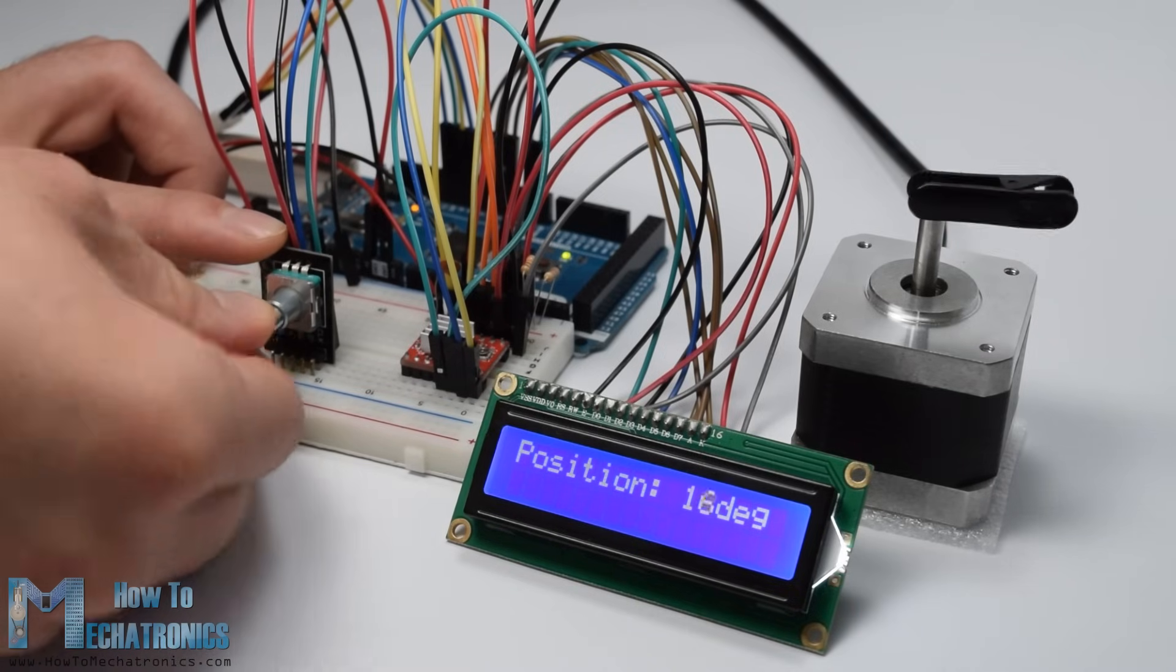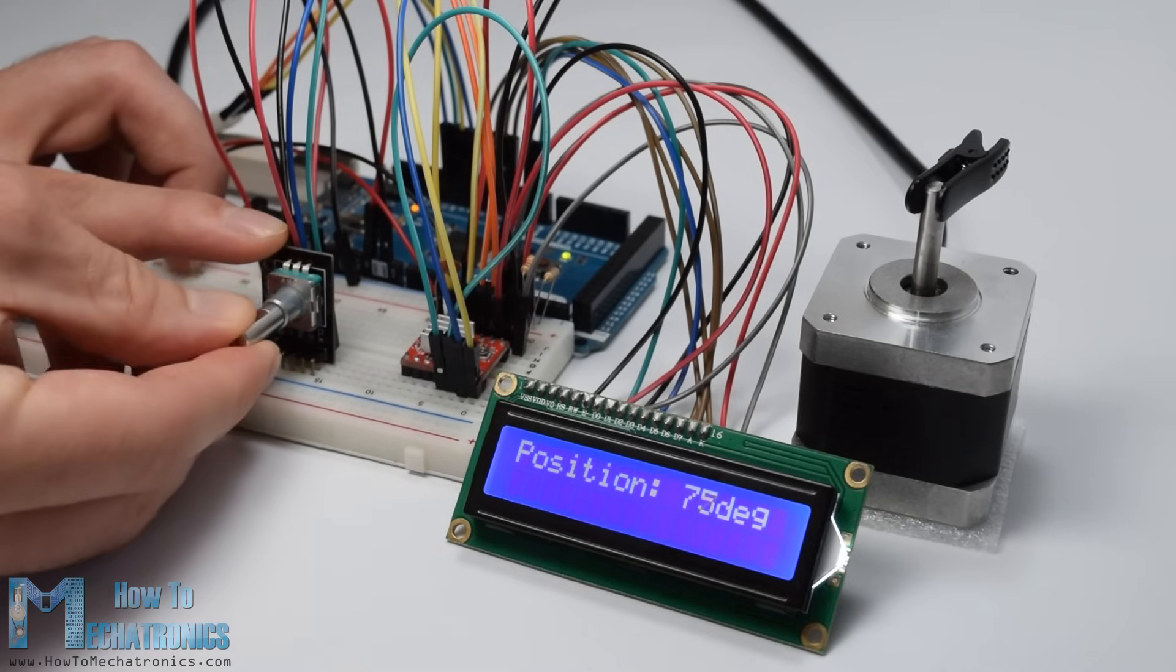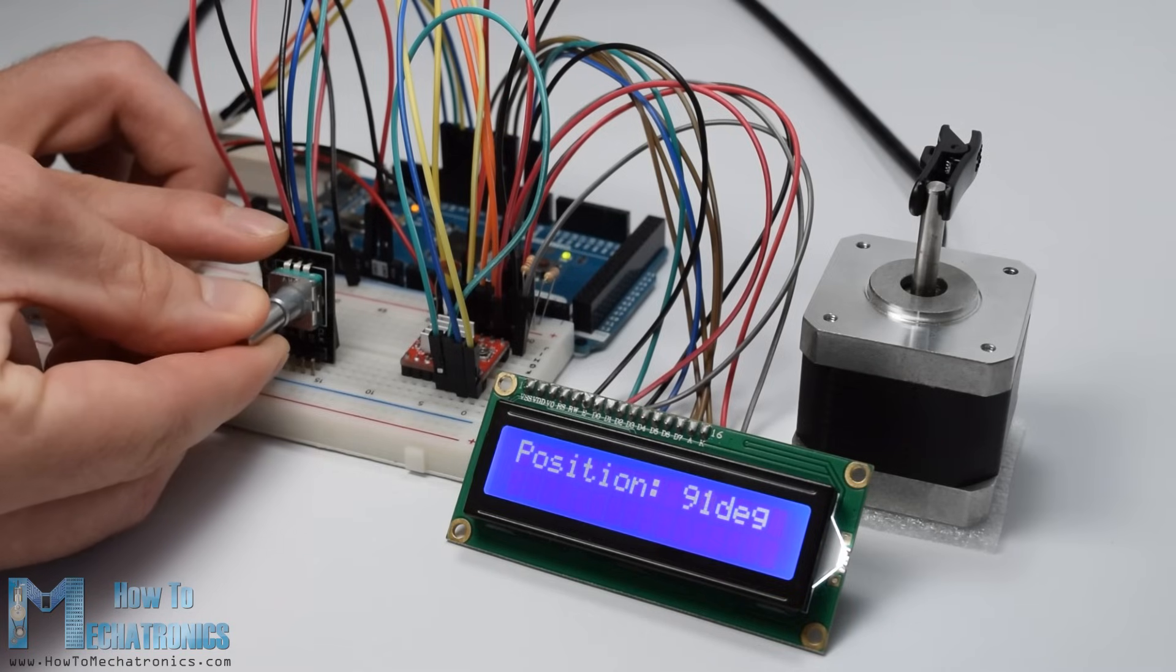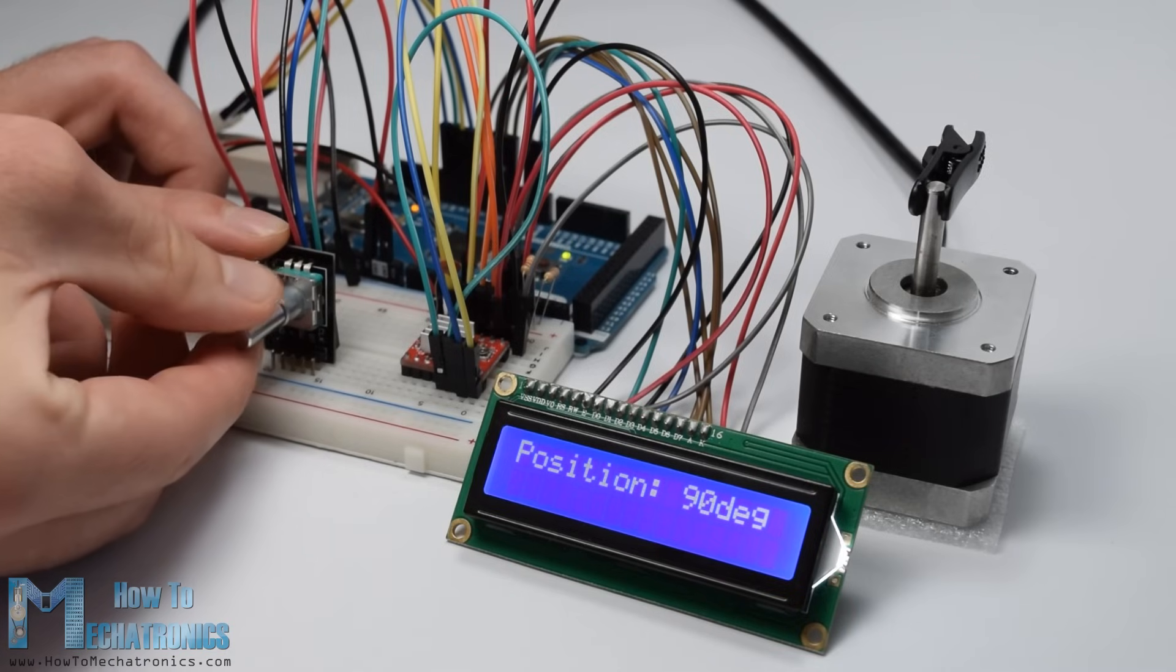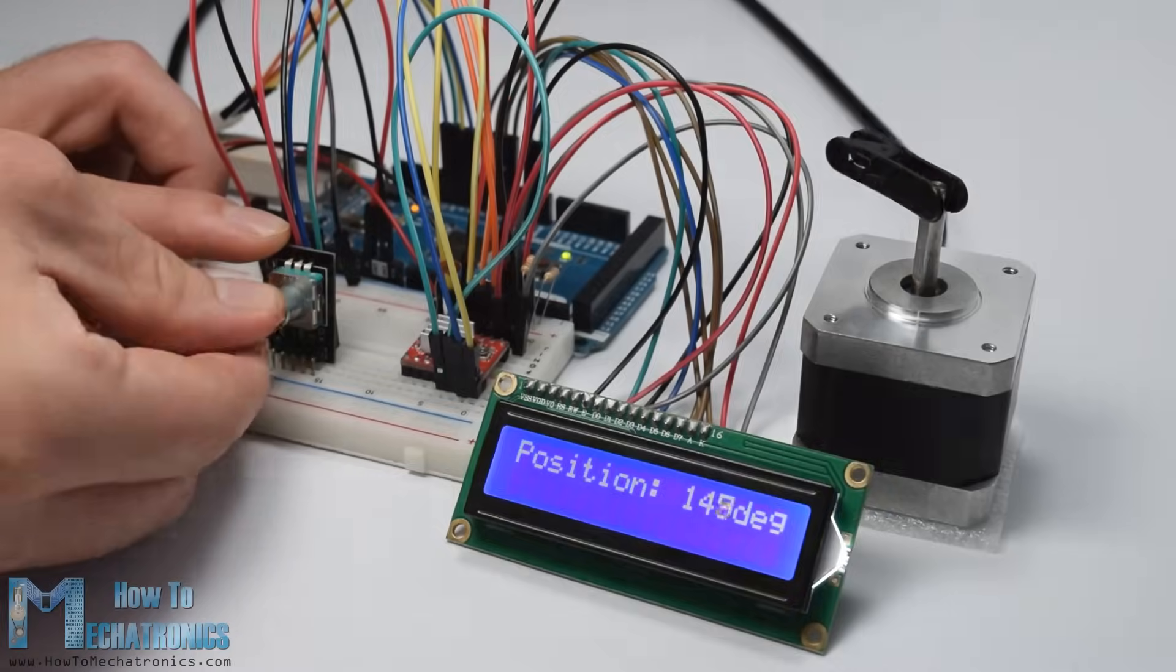A rotary encoder is a type of position sensor which is used for determining the angular position of a rotating shaft. It generates an electrical signal, either analog or digital, according to the rotation movement.